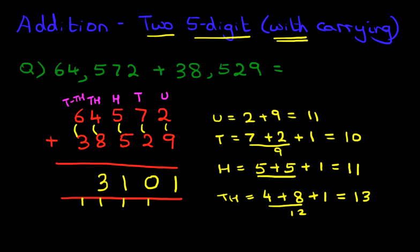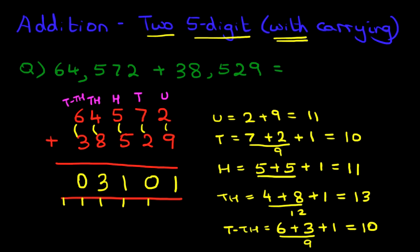And lastly, we're going to add the ten thousands. We have six plus three, plus the one we have carried over. Six plus three is nine, plus the one is ten. So we put one here and zero over here. Now this new column over here — let's just put an arrow — this new column is the HTH, which is the hundred thousands. We have zero here, zero here, but we've got one that we've carried over.